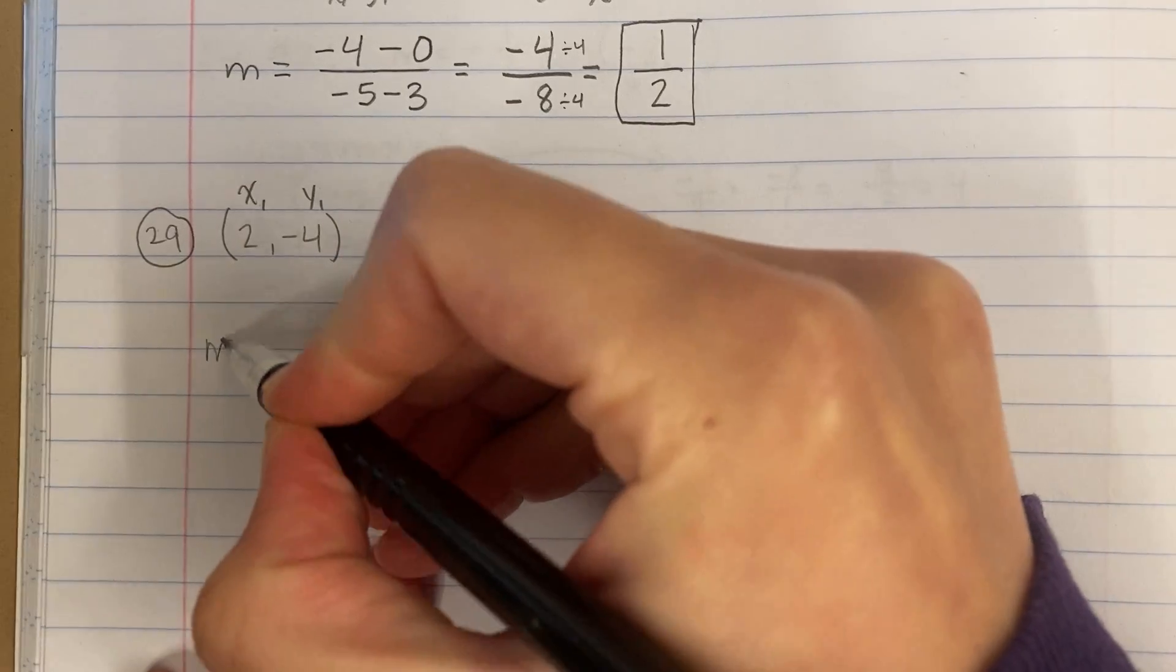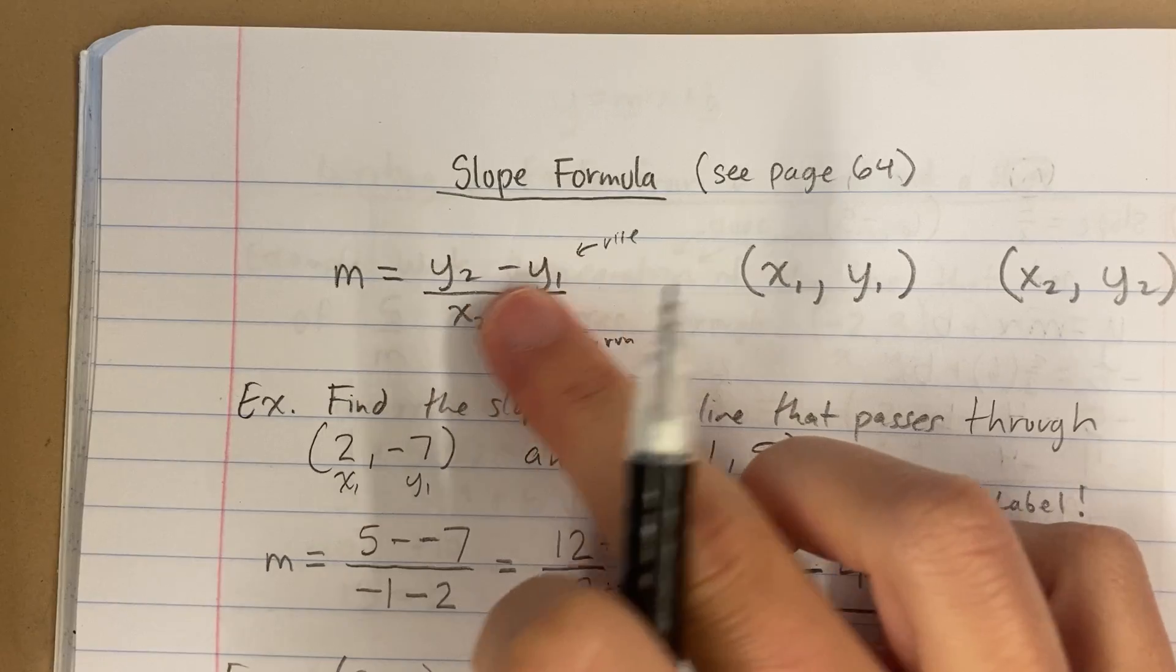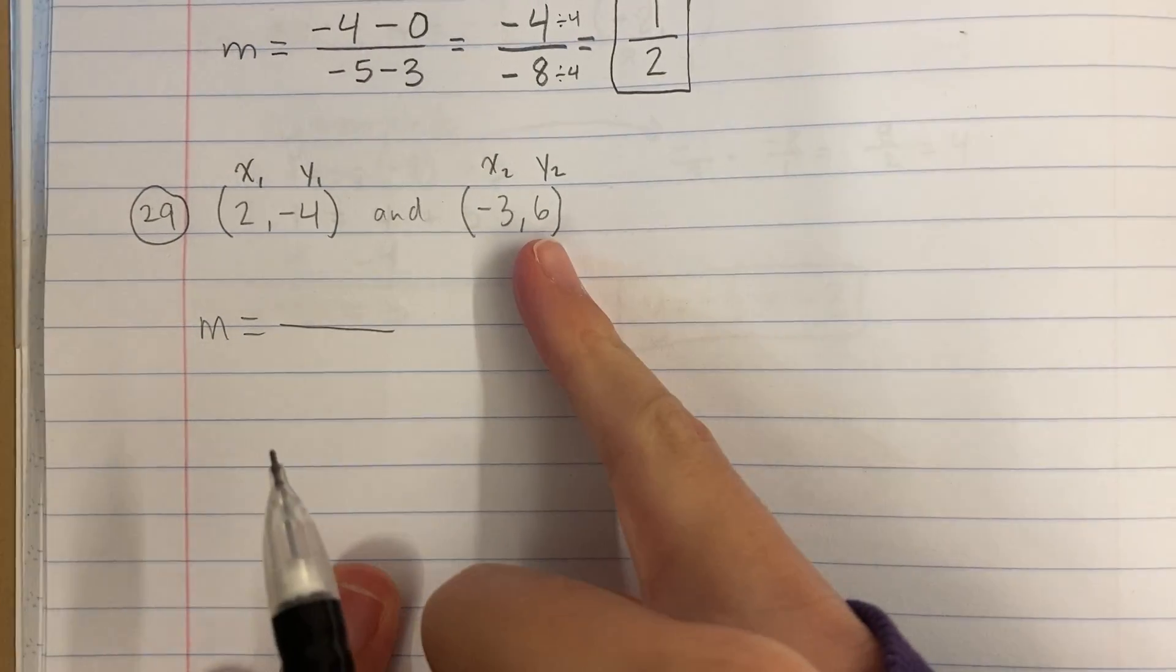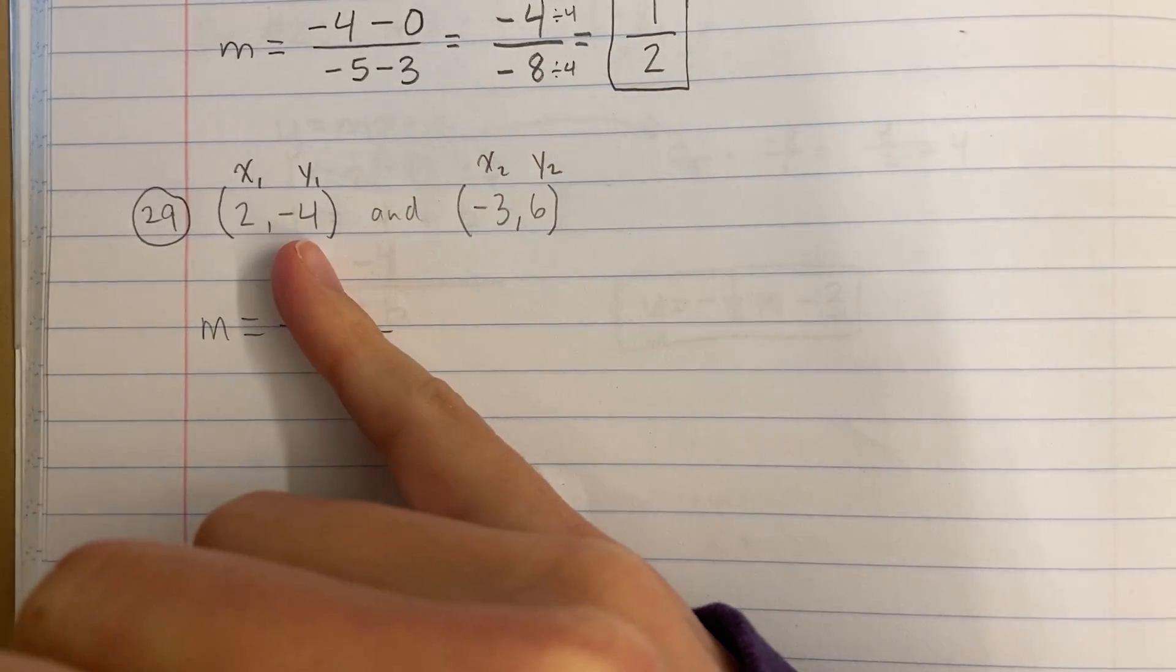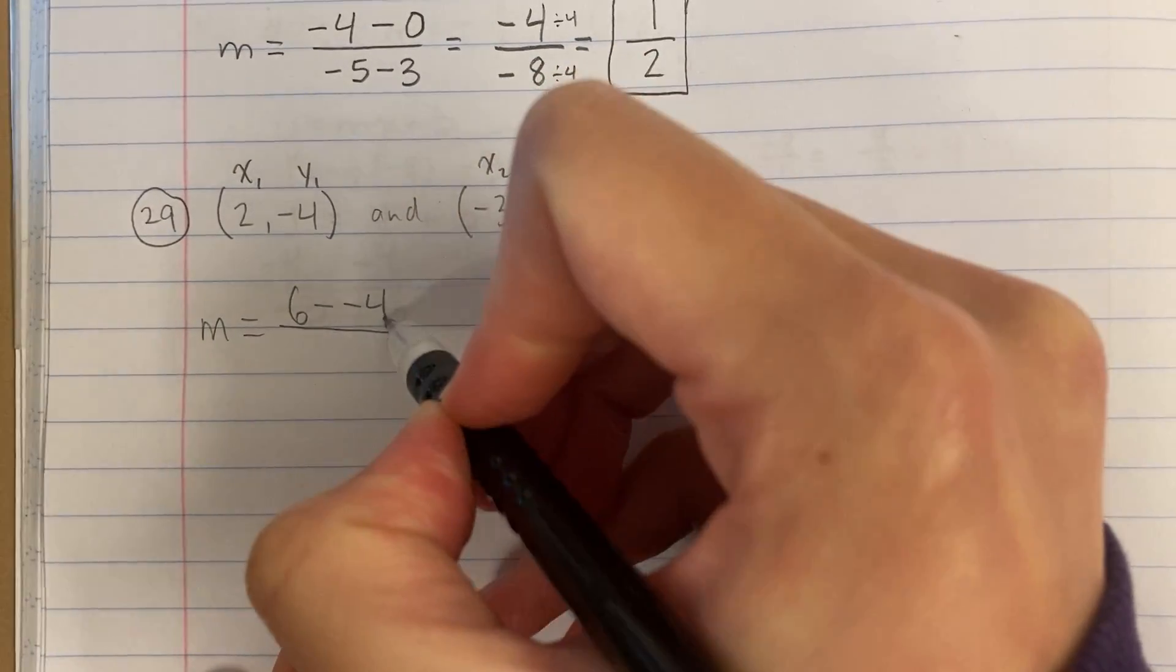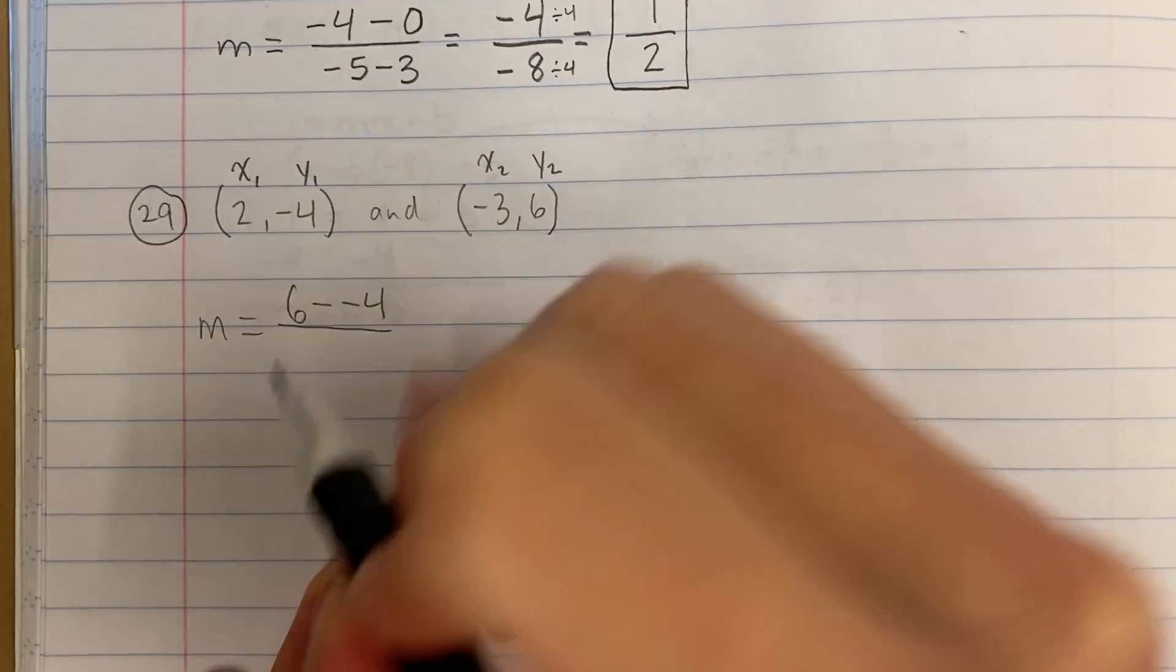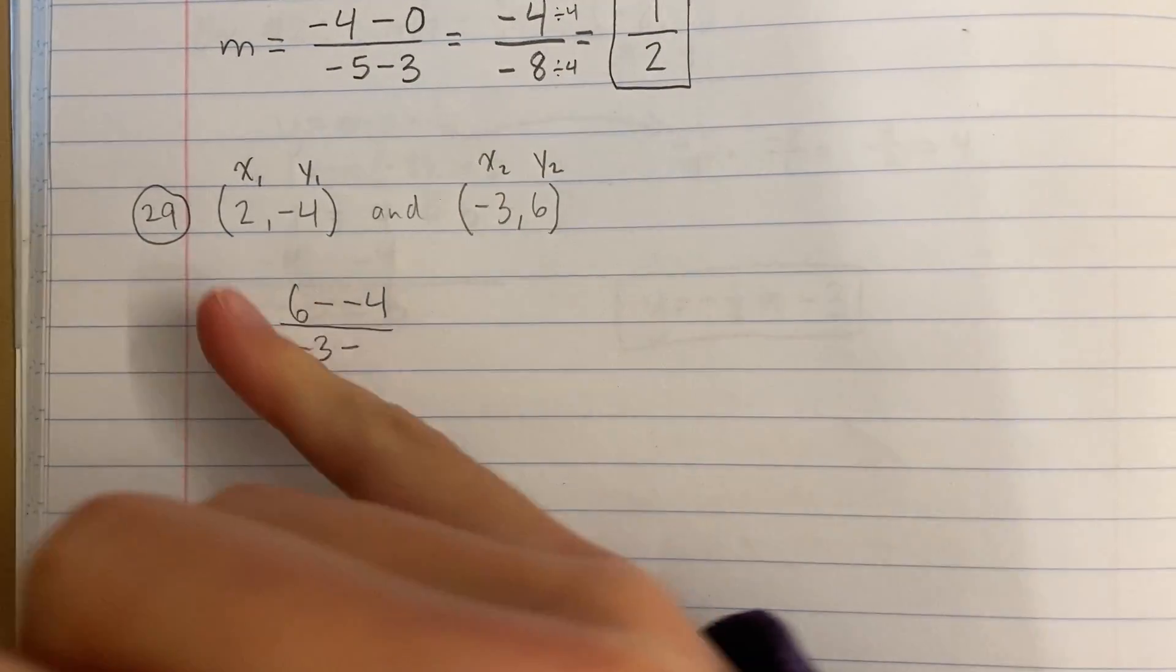Now I'm going to use my formula and plug in. So my formula is y2 minus y1 over x2 minus x1.